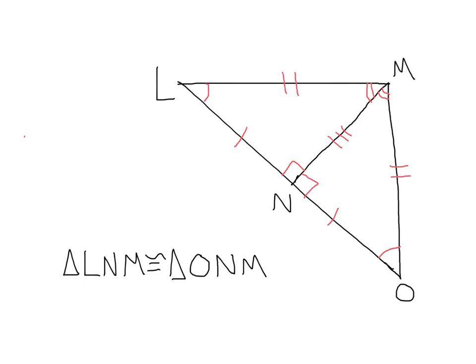Just to check, let's look at our sides. LN should match with ON: LN has one dash and ON also has one dash. Next, NM should match with NM — NM is obviously congruent to itself. Lastly, LM and OM: LM has two dashes and OM has two dashes. So these are indeed congruent triangles.